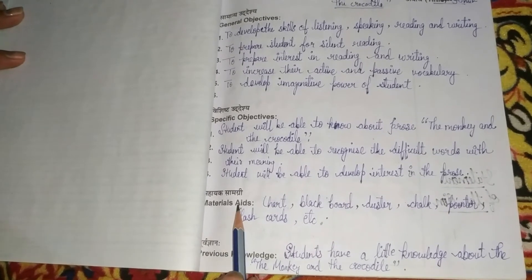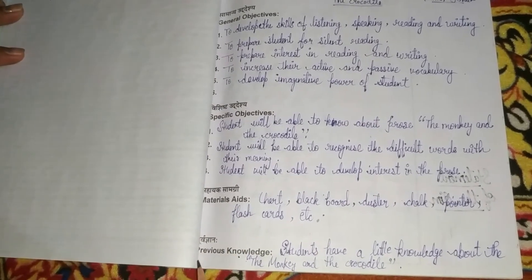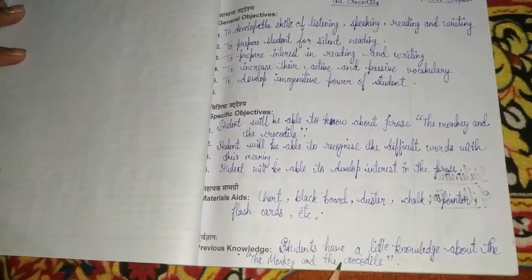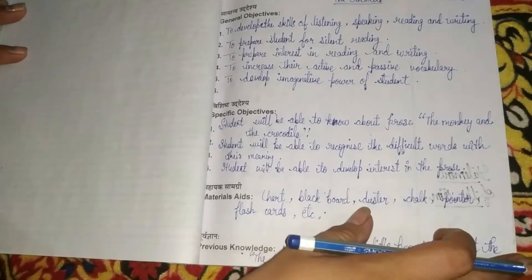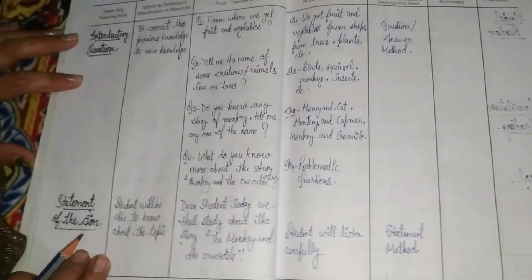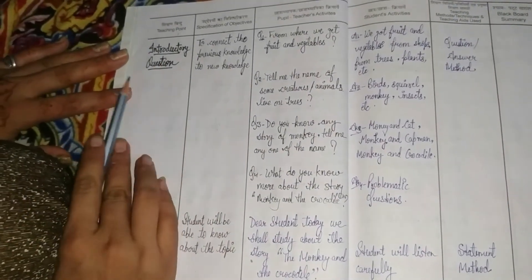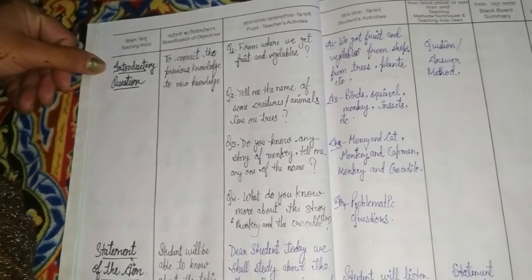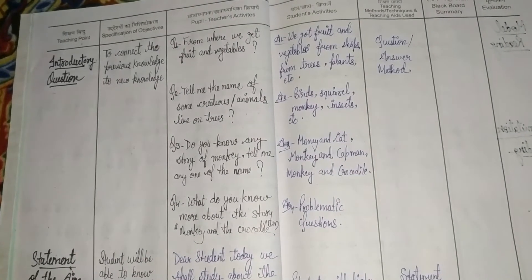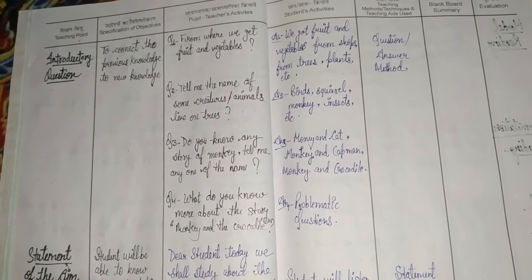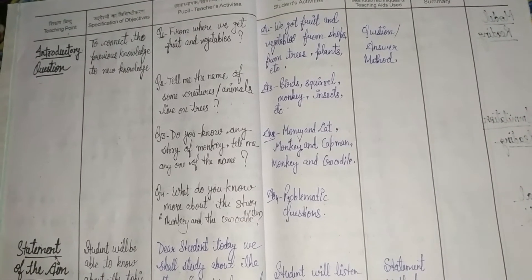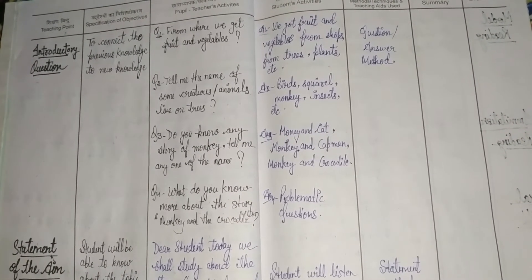Then comes previous knowledge — whatever prior knowledge the student has regarding this chapter. Next comes introductory questions. As you know, before explaining anything, we need to take an introduction. The purpose is to connect previous knowledge with new knowledge. For that, you will ask the students a few questions.